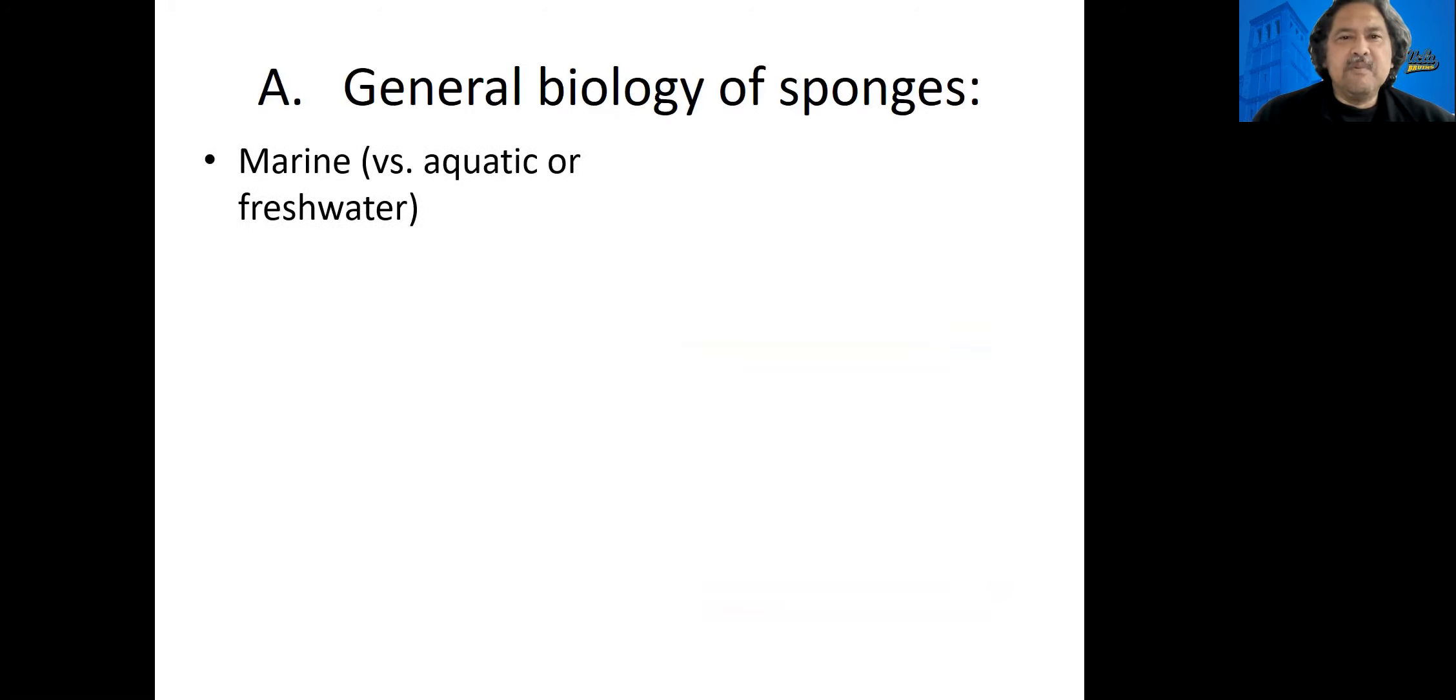Sponges are, for the most part, marine organisms. The term marine means that it lives in the ocean. There are some similar terms. Aquatic means it lives in the water, and freshwater means it lives in lakes and rivers and streams, not the ocean.